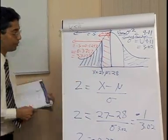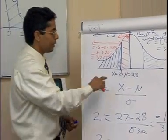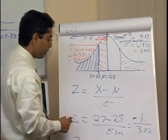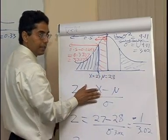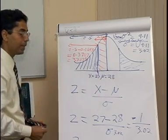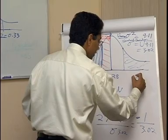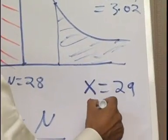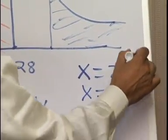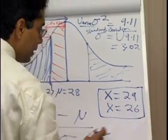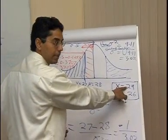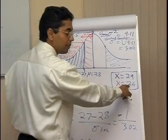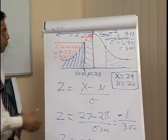As a further exercise, I want you to find out what is the probability of the project being completed in 29 days, and also what is the probability of the project being completed in 26 days. Work these out for yourself. Find the probability that the project will be completed in 29 or less days, and also the probability of it being completed in 26 or less days. The principle is about the same.